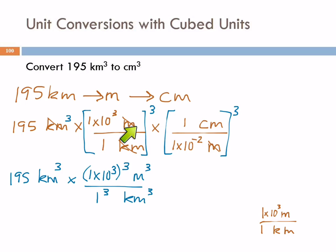Over here, we don't cube the 195 because there's no parentheses around this. This cube applies only to the unit. And then over here, this is not equals, it is times. 1 cubed centimeters cubed divided by 1 times 10 to the minus 2 cubed meters cubed. Any questions?